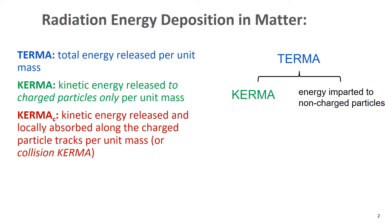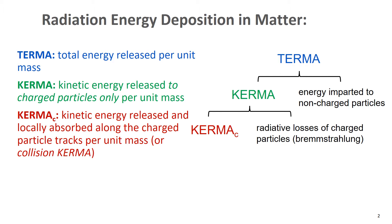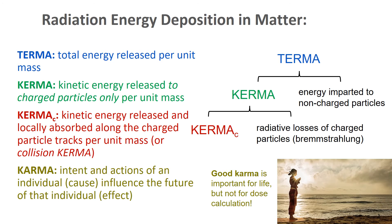KERMA is more important for dose calculation. It can be subdivided into collision KERMA — the energy absorbed along the charged particle tracks through collision events — and the other portion, which would be the radiative losses of those charged particles, such as bremsstrahlung interactions. We call that radiative KERMA, or K sub r.